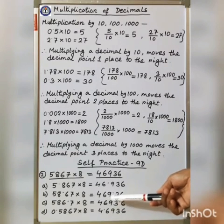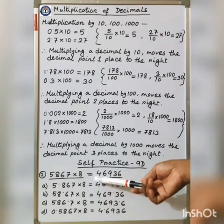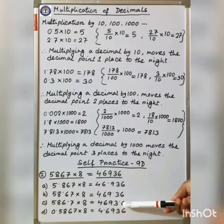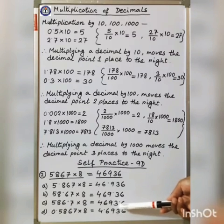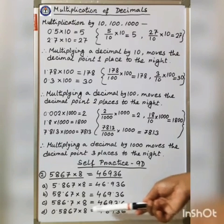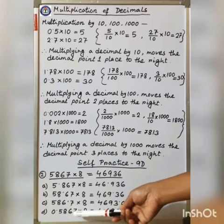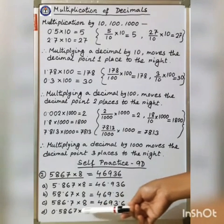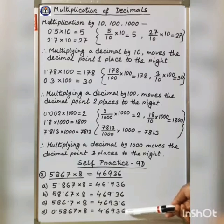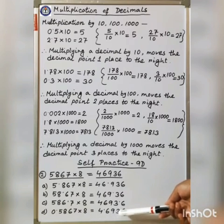So the answer is 469.36. Next: 586.7 into 8, the answer is 46936. Count the decimal place — there is one decimal place, so put the decimal point after one digit. Therefore the answer is 4693.6. For the next one, the answer is 46936. Count the decimal places: 1, 2, 3, 4 — four decimal places. Place the decimal point after 4 digits: 1, 2, 3, 4. Therefore the answer is 4.6936.